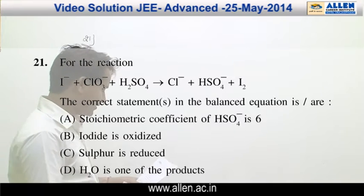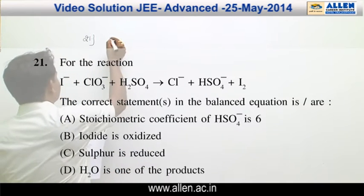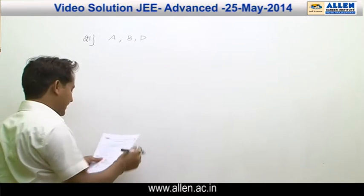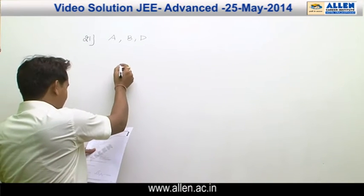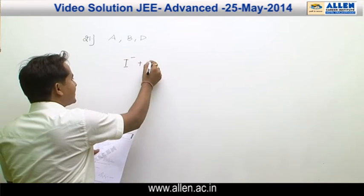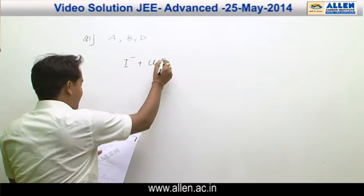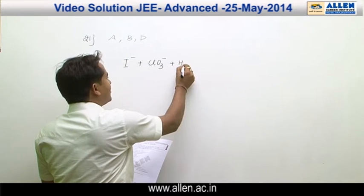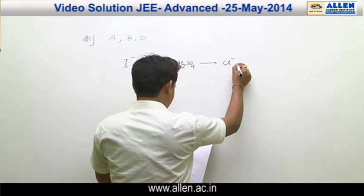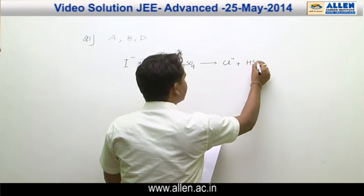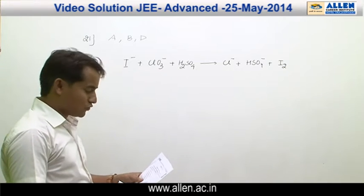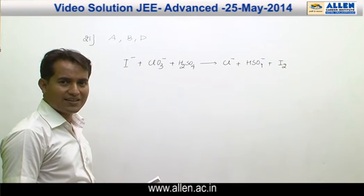Question number 21. The answer of this question is A, B, D. In this question, an unbalanced chemical equation I⁻ plus ClO₃⁻ plus H₂SO₄ gives Cl⁻ plus HSO₄⁻ plus I₂ is given. To solve this question, we have to first balance the equation.